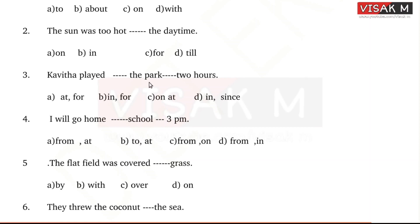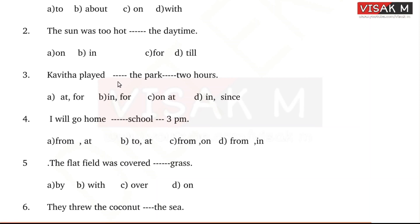Next: Kavitha played dash the park. This is a place, so this is a preposition of place. Options: A - at, B - in, C - on, D - at/in. Kavitha played in the park. The answer is 'in.'